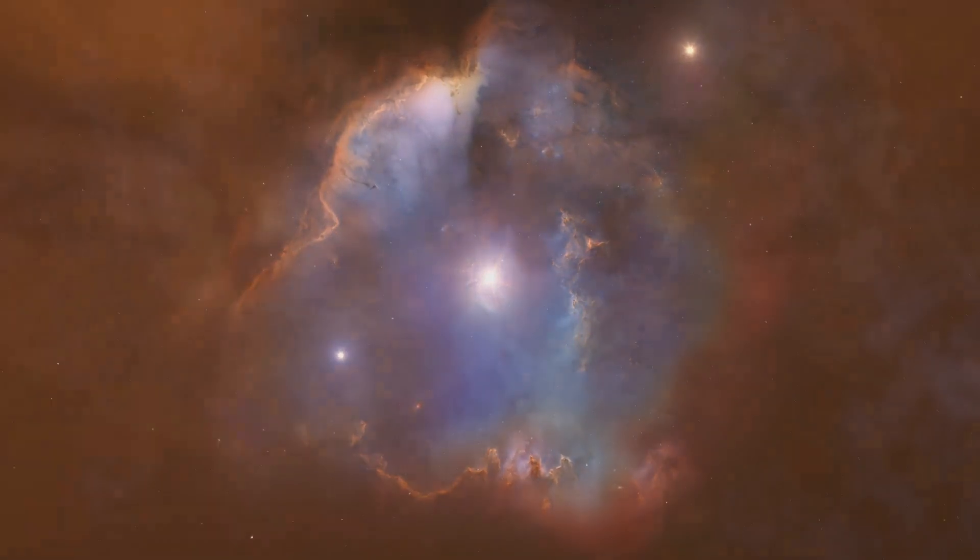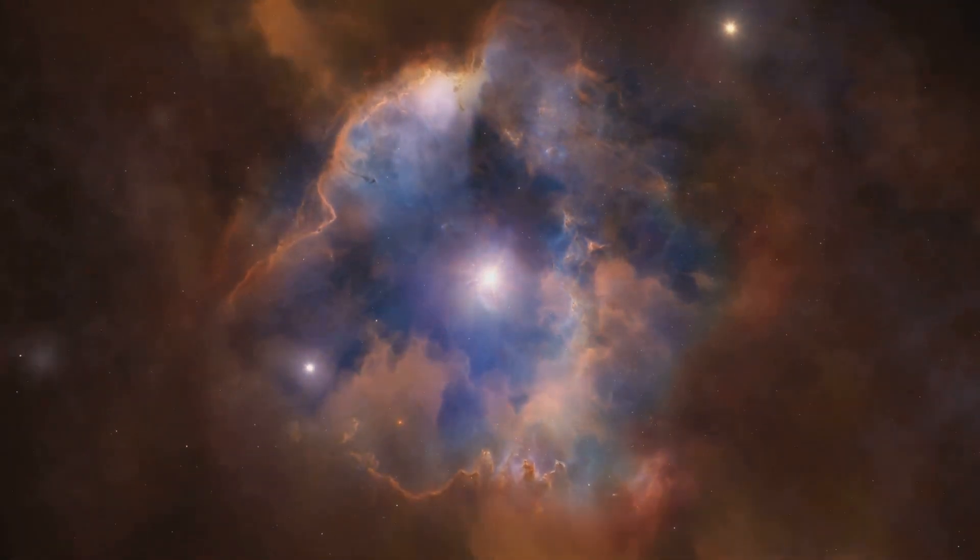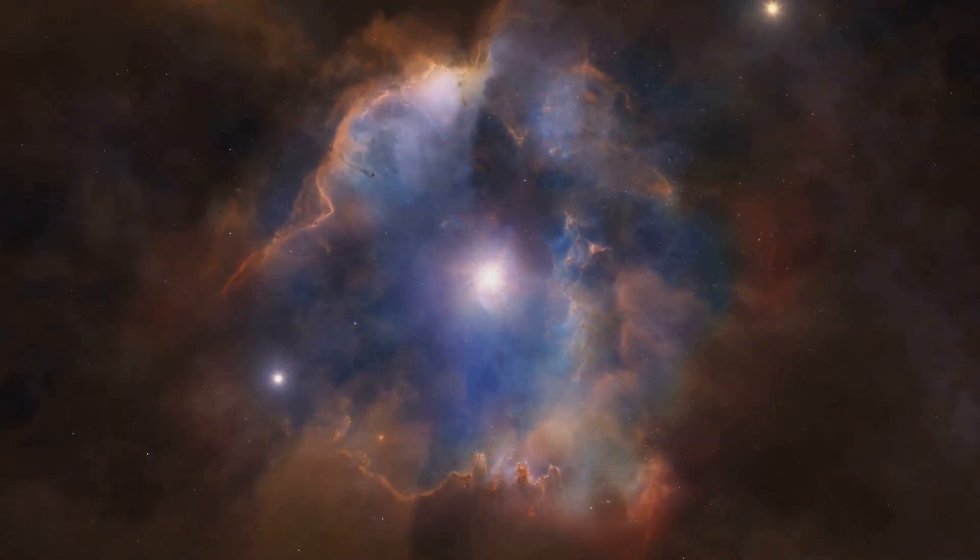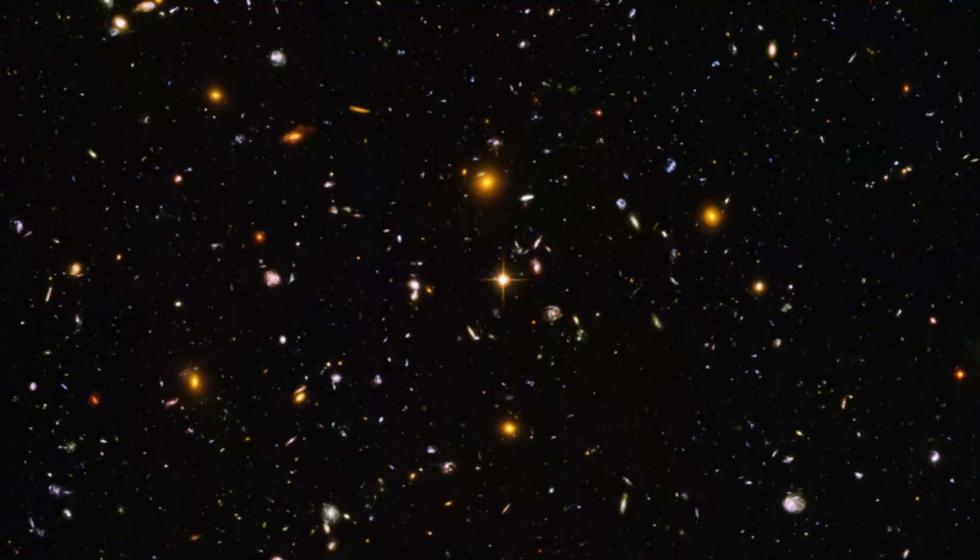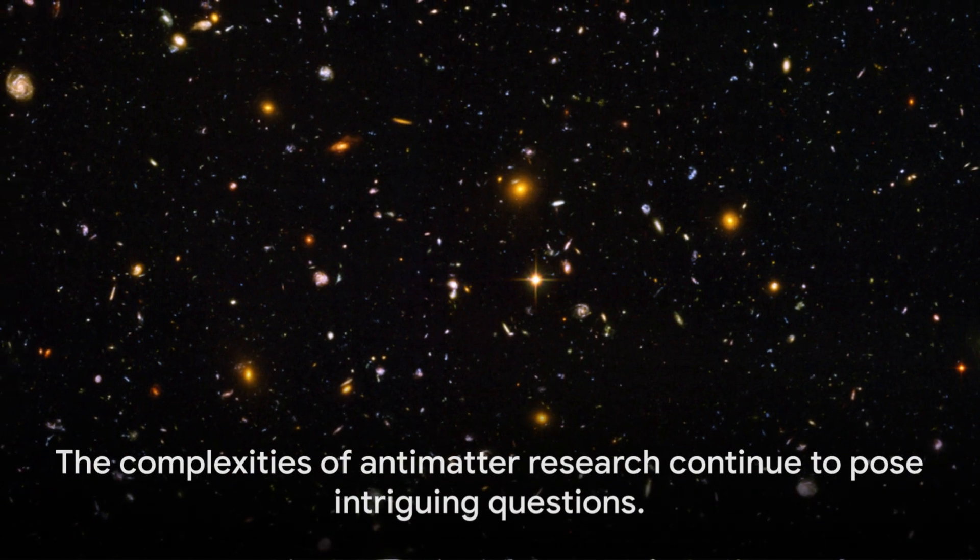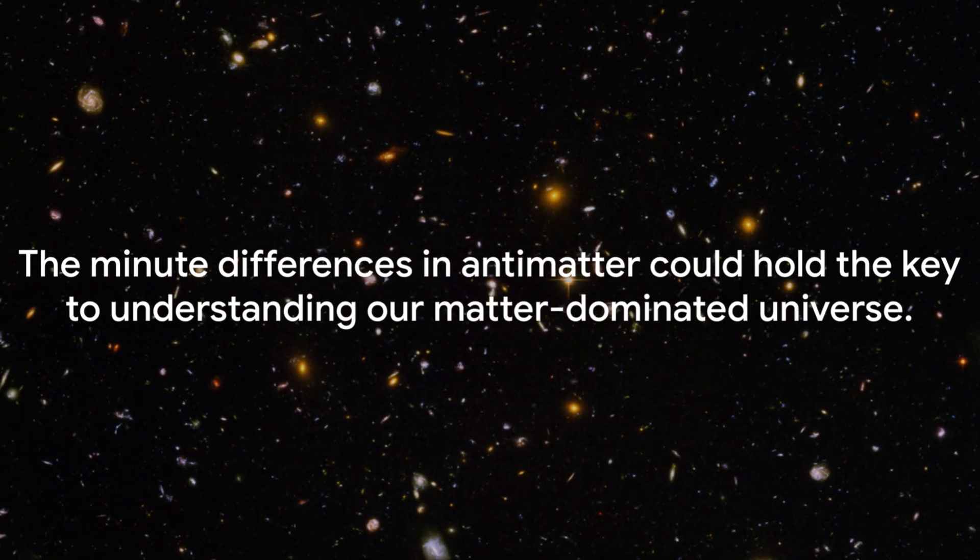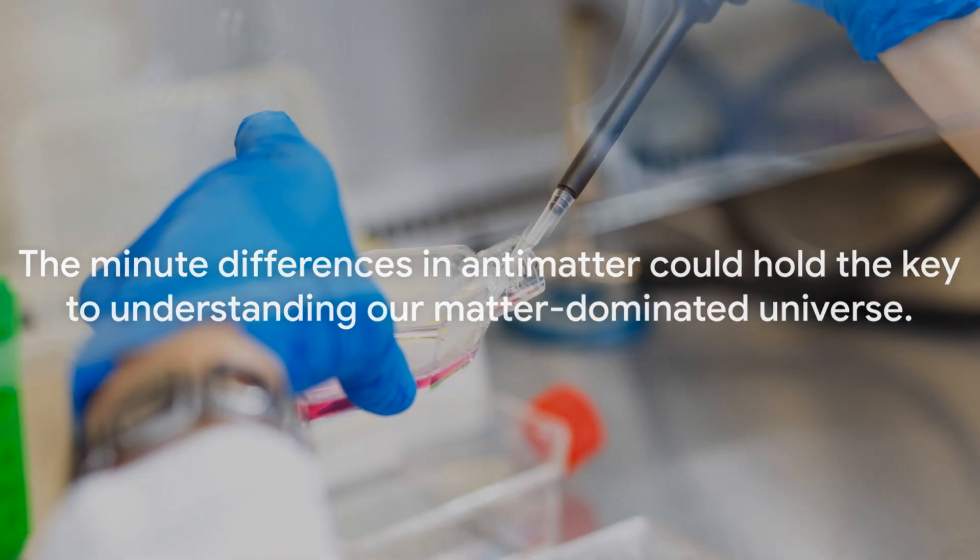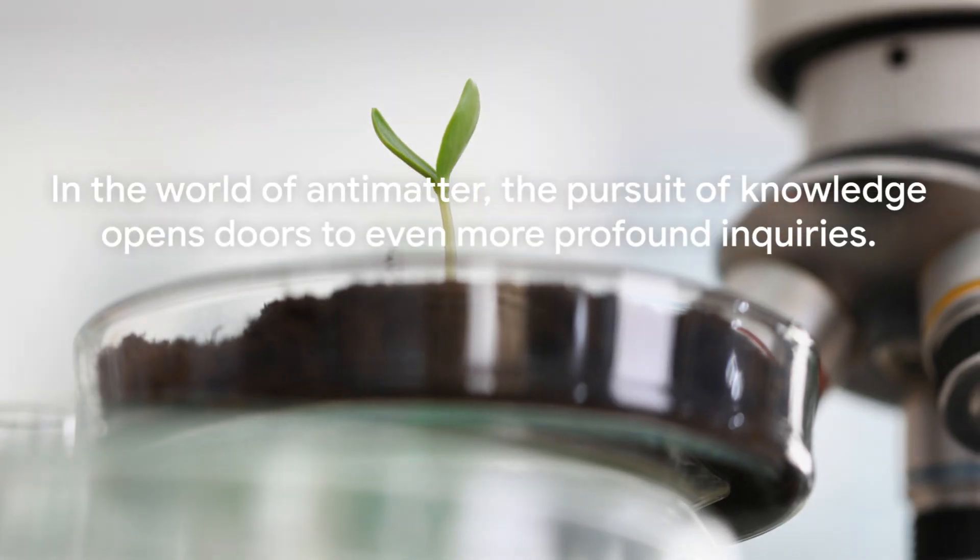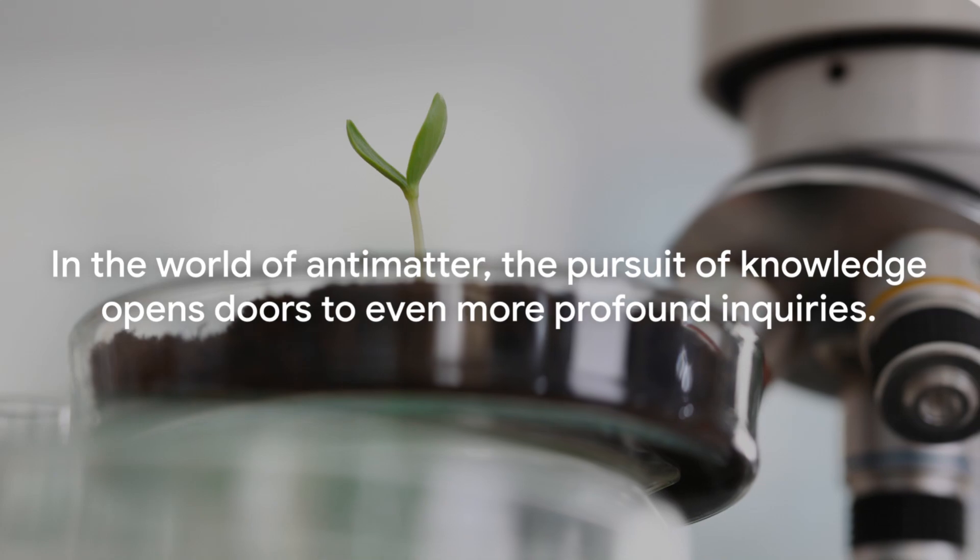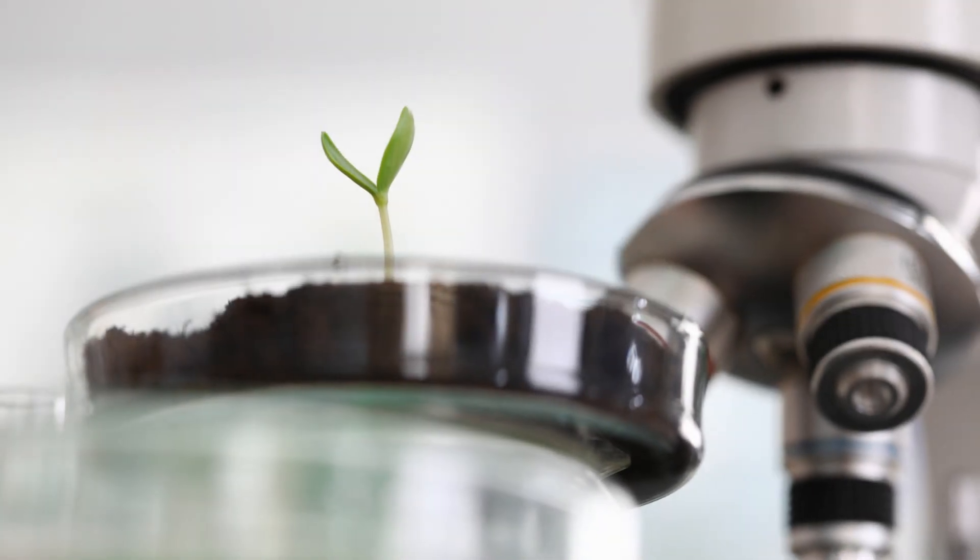So what's the big picture here? Well, these findings are painting a tantalizing image of a universe where matter and antimatter are almost perfect mirror images of each other. But the key word here is almost. The minute differences that do exist could hold the answer to why our universe is made of matter and not antimatter. In the world of antimatter, it seems the more we learn, the more questions we have.